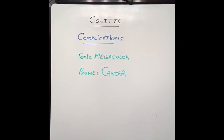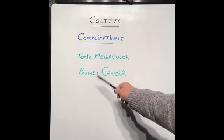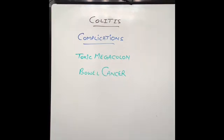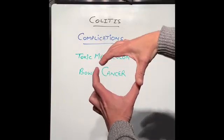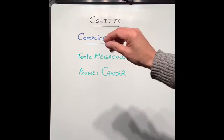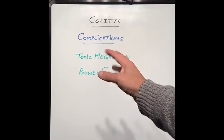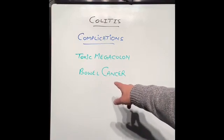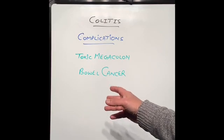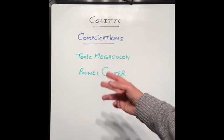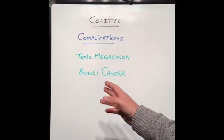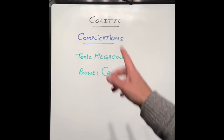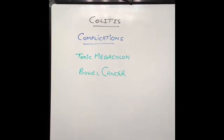There are two serious complications of colitis. The first is toxic megacolon, where the bowel becomes very large and the bowel wall becomes very thin — almost like tissue paper — and can easily perforate. A perforation can lead to peritonitis and can be fatal. These patients require very aggressive medical treatment, and if that fails, emergency surgery to remove the colon. The second complication is bowel cancer, whose risk increases if a greater part of the large intestine is involved, the disease is severe, and has been present for ten or more years. In such cases, units will monitor the bowel with repeated colonoscopy every few years to check for cancer changes.